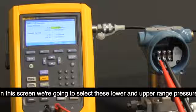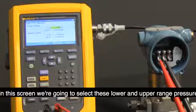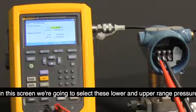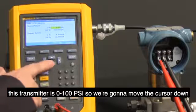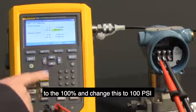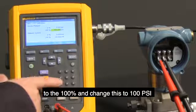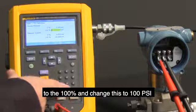In this screen, we're going to select the lower and upper range pressure. This transmitter is 0 to 100 psi, so we're going to move the cursor down to the 100% and change this to 100 psi.